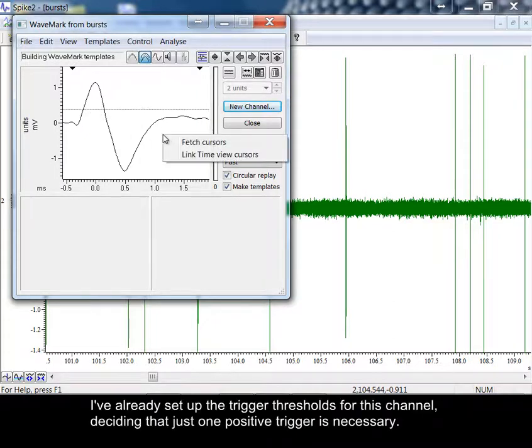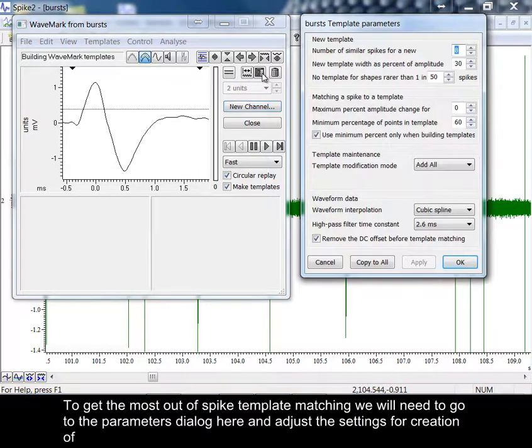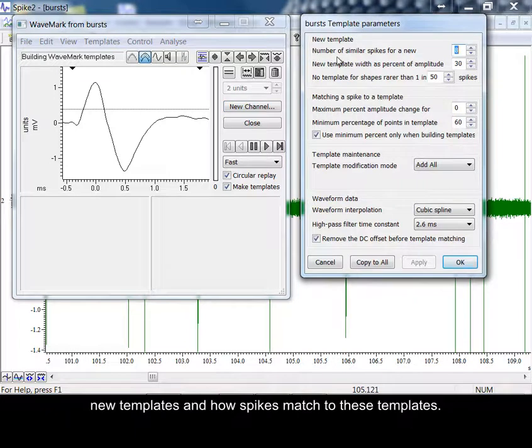I've already set up the trigger thresholds for this channel, deciding that just one positive trigger is necessary. To get the most out of spike template matching, we will need to go to the parameters dialog here and adjust the settings for creation of new templates and how spikes match to these templates.